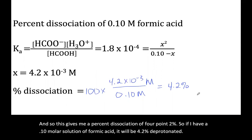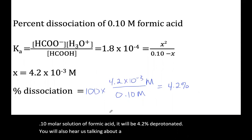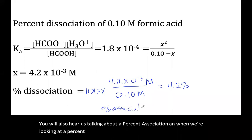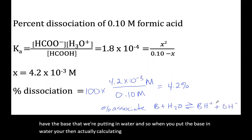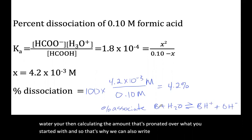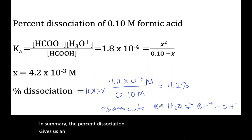You will also hear us talking about percent association. When we're looking at percent association, we're actually just looking at if we have the base that we're putting in water. And so when you put the base in water, you're then calculating the amount that's protonated over what you started with. And so that's why we can also write percent association. So in summary, the percent dissociation gives us an idea of how much of our weak acid is dissociated and it is concentration dependent.